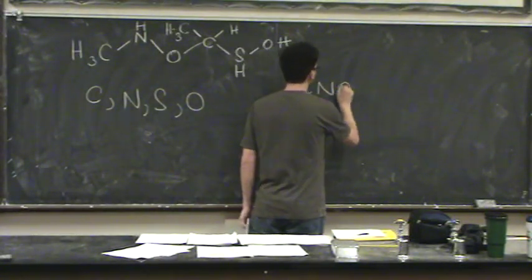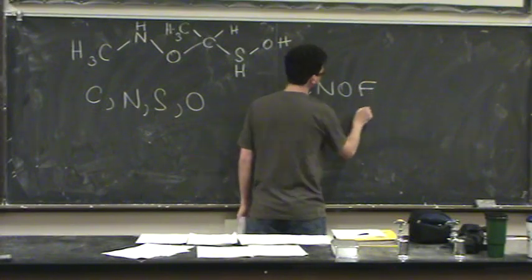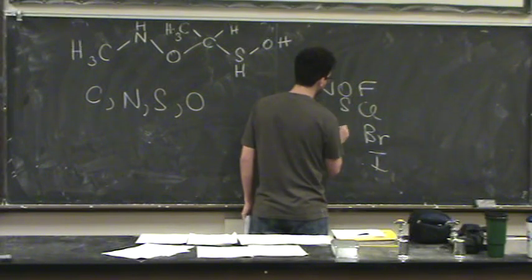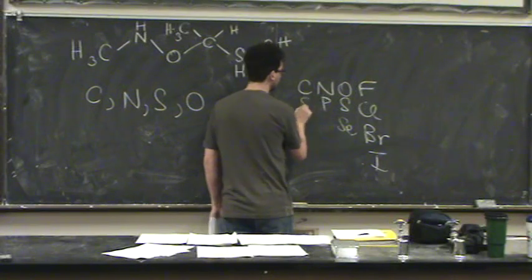If you draw the periodic table: carbon, nitrogen, oxygen, fluorine. Chlorine, bromine, iodine, etc. Sulfur, I think selenium, phosphorus, silicon, etc.